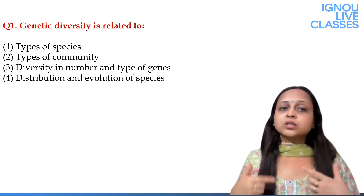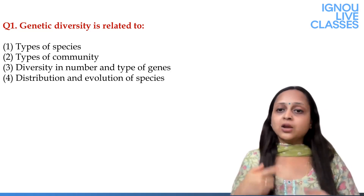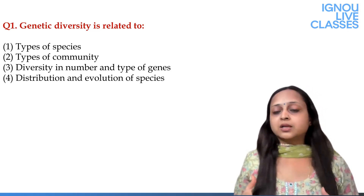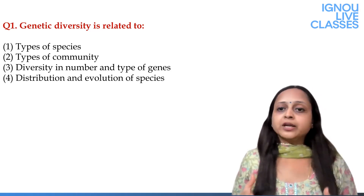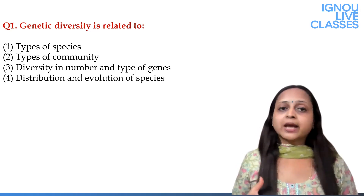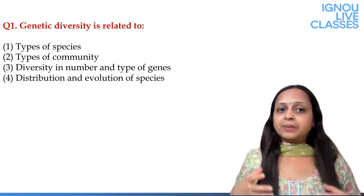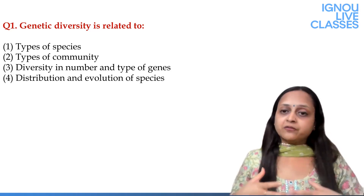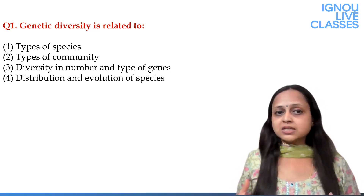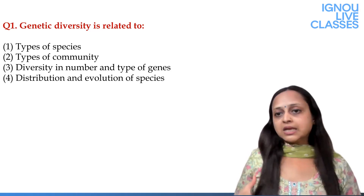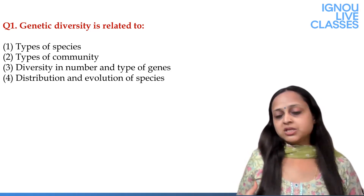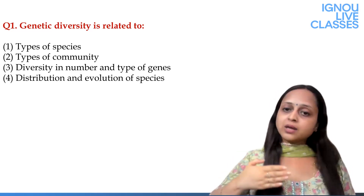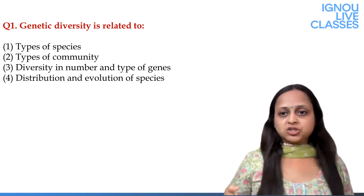The species is one. So genetic diversity means that within one species we may find different individuals with different traits. Genetic diversity is related to the number and types of genes — there are various genes, many genes. So diversity in number and types of the genes.